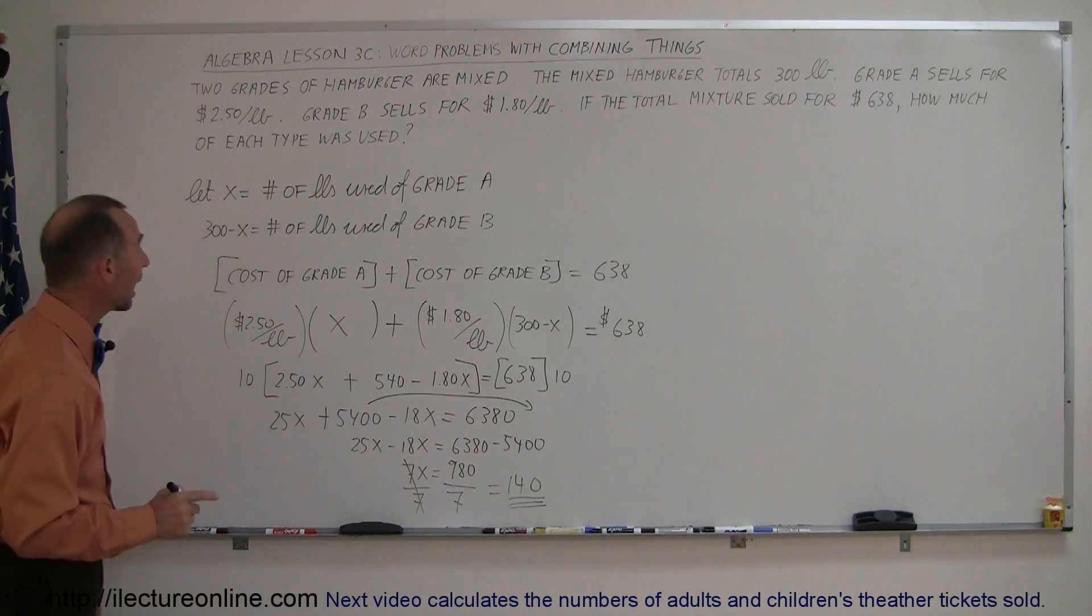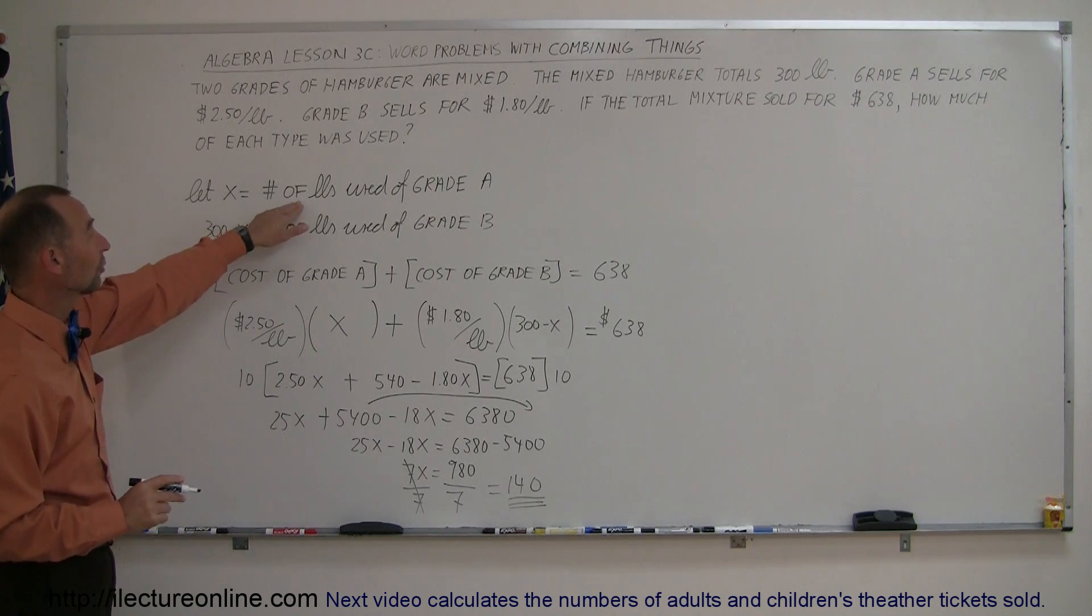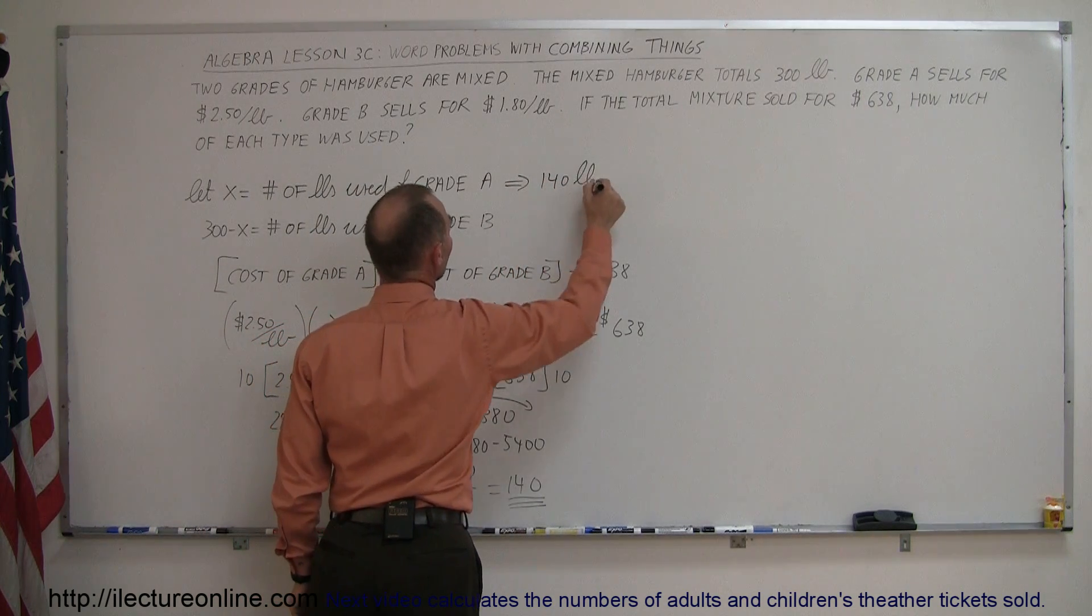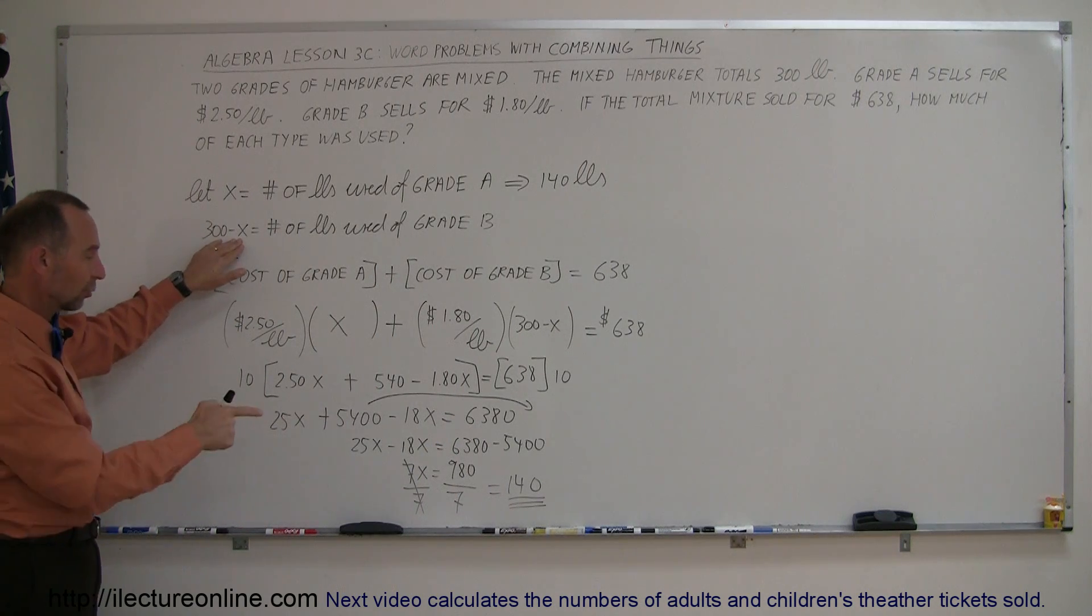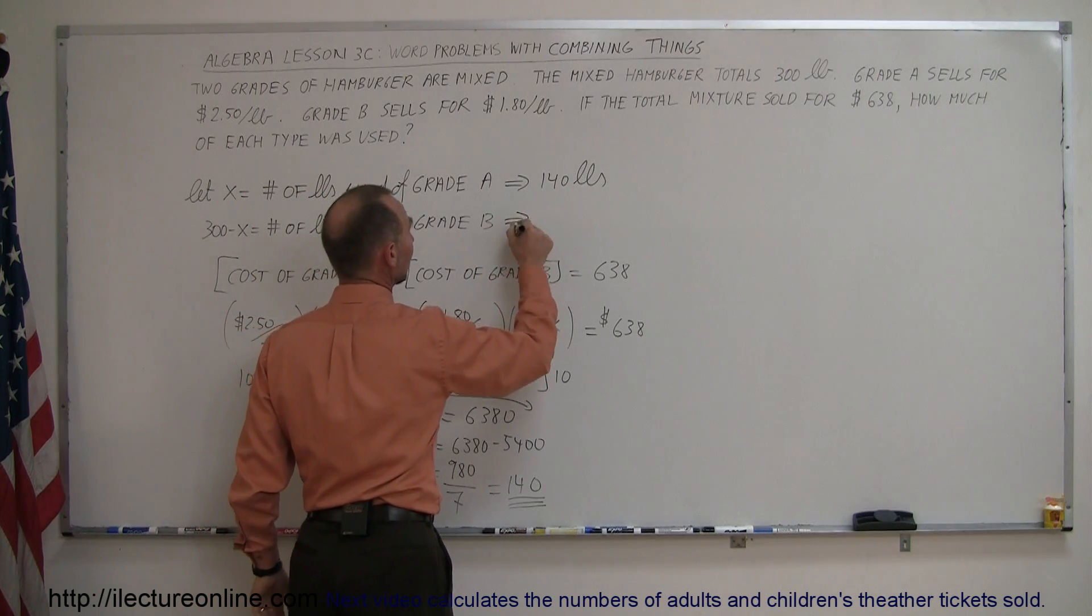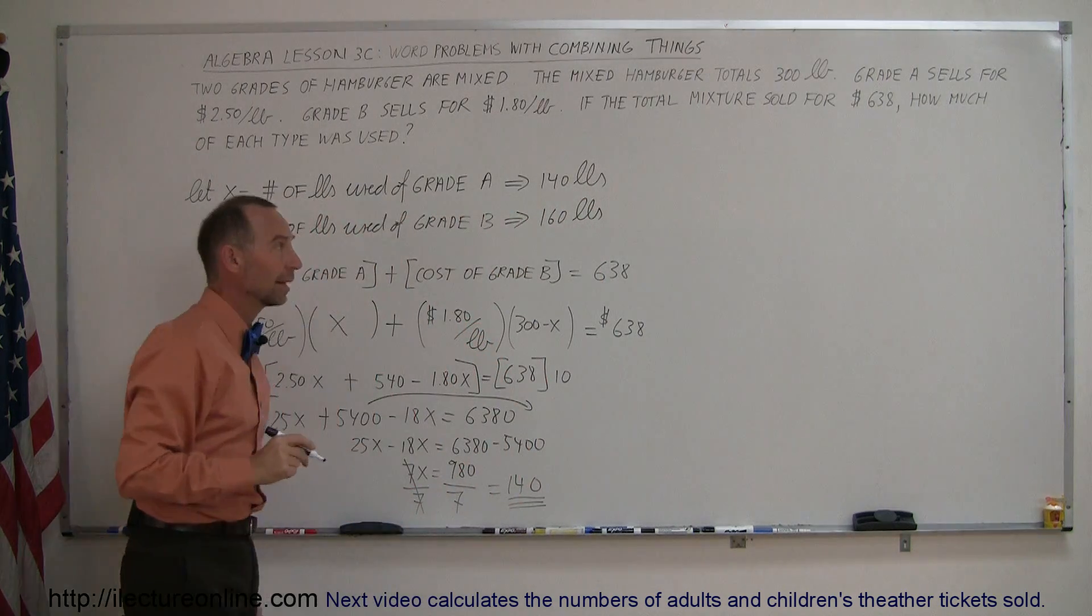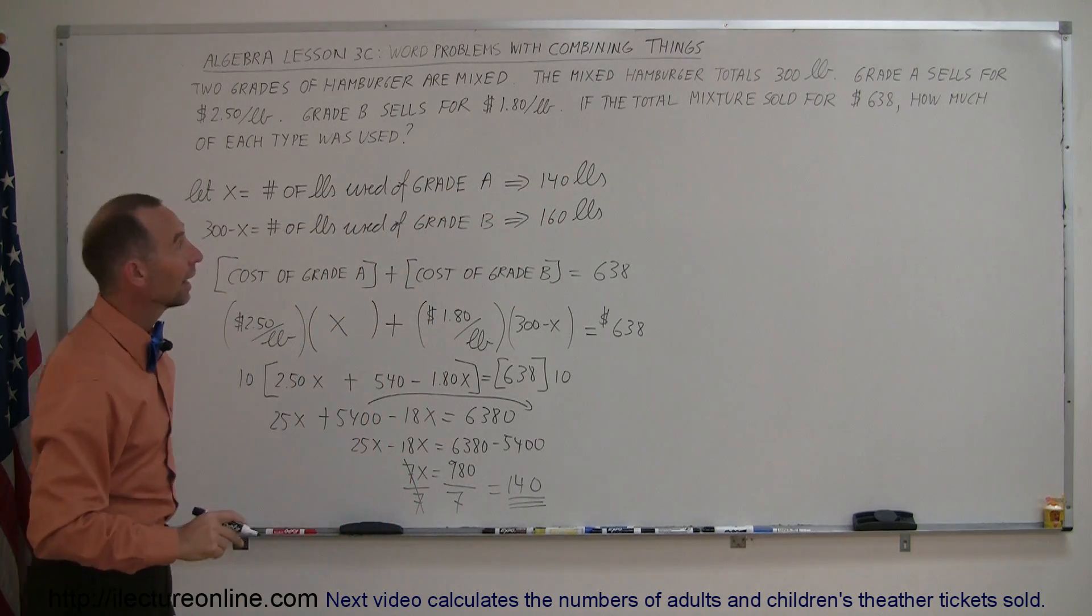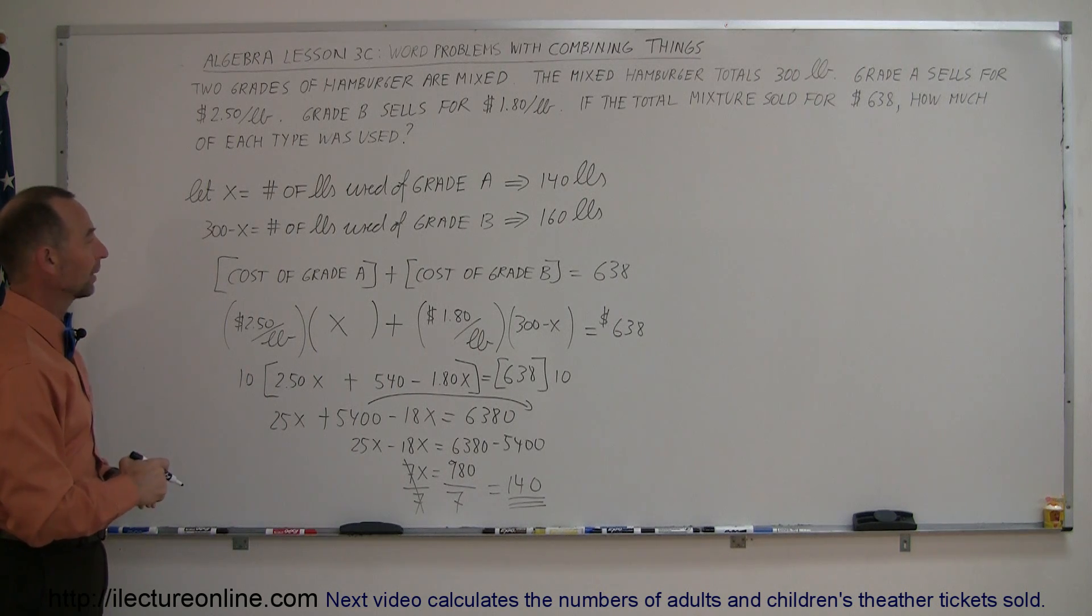And now we can go back and see how we define everything. Since X represents the number of pounds used of grade A, that means we used 140 pounds of grade A. And then here, 300 minus X, since X is 140, 300 minus 140 is 160. That means 160 pounds were used of grade B. And if you add the two together, you get 300, which is how much we had to begin with. So that looks good. That's how you do a problem like that.